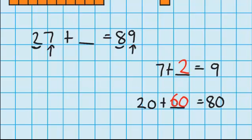I know that 20 plus 60 equals 80. So now we just need to see how much we added. You can see here we needed to add a 2, and here we added 60. So in total we added 62. So 27 plus 62 equals 89.